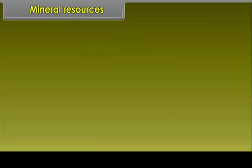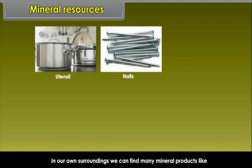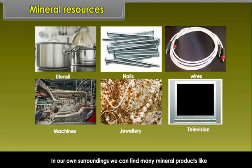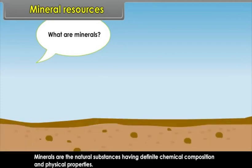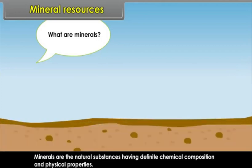In our own surroundings, we can find many mineral products like utensils, nails, wires, machines, jewellery and television. All these have been made of some kind of mineral. What are minerals? Minerals are natural substances having definite chemical composition and physical properties.